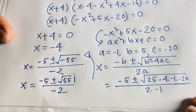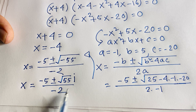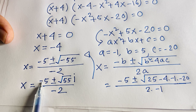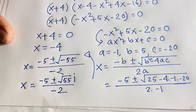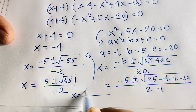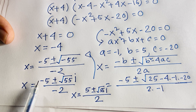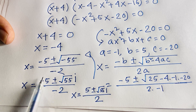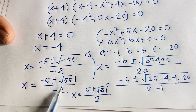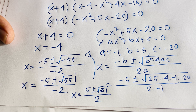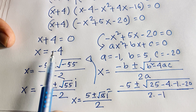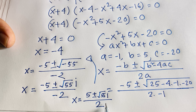Simplifying, the square root of negative 55 is √55·i, so x equals (negative 5 plus or minus √55·i) over negative 2. Factoring out the negative from the denominator, the negatives cancel to give x equals (5 plus or minus √55·i) over 2. Our final answers are x equals negative 4 and x equals (5 plus or minus √55·i) divided by 2.